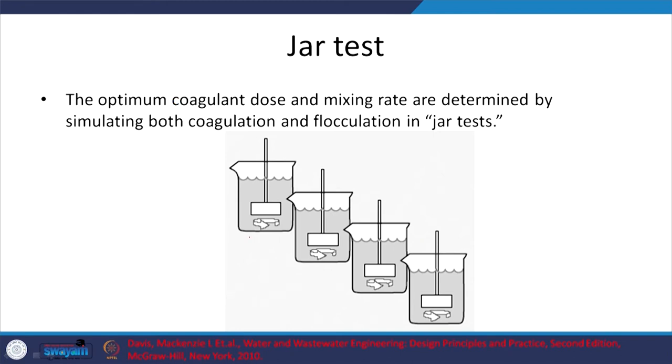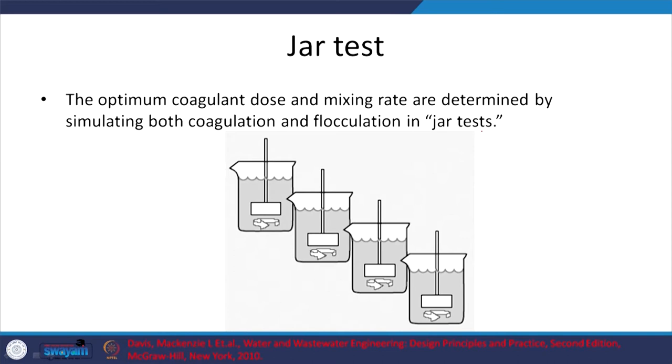The jar test is simple. We take the sample, and we consider that pH plays a role because depending on pH, precipitation can occur or different charges can appear. So we can vary two primary variables: the charge indirectly through pH, and the coagulant dose. These two aspects are checked while conducting jar tests in the lab. We are simulating coagulation and then flocculation. We look at coagulant dose and mixing rate, though mixing rate will depend on the type of mixer or impeller and the dimensions of your system.